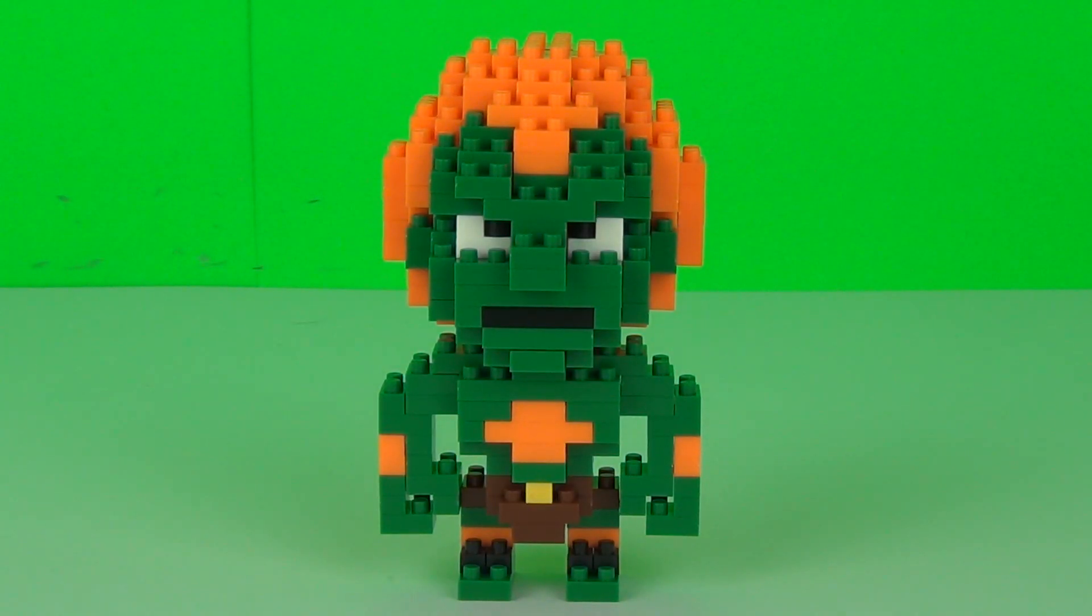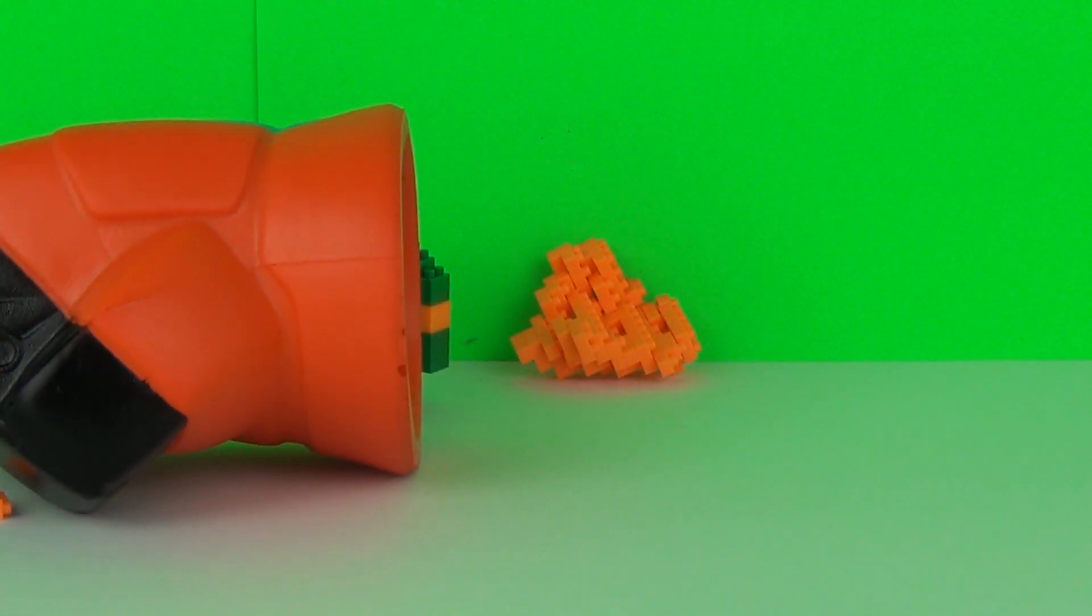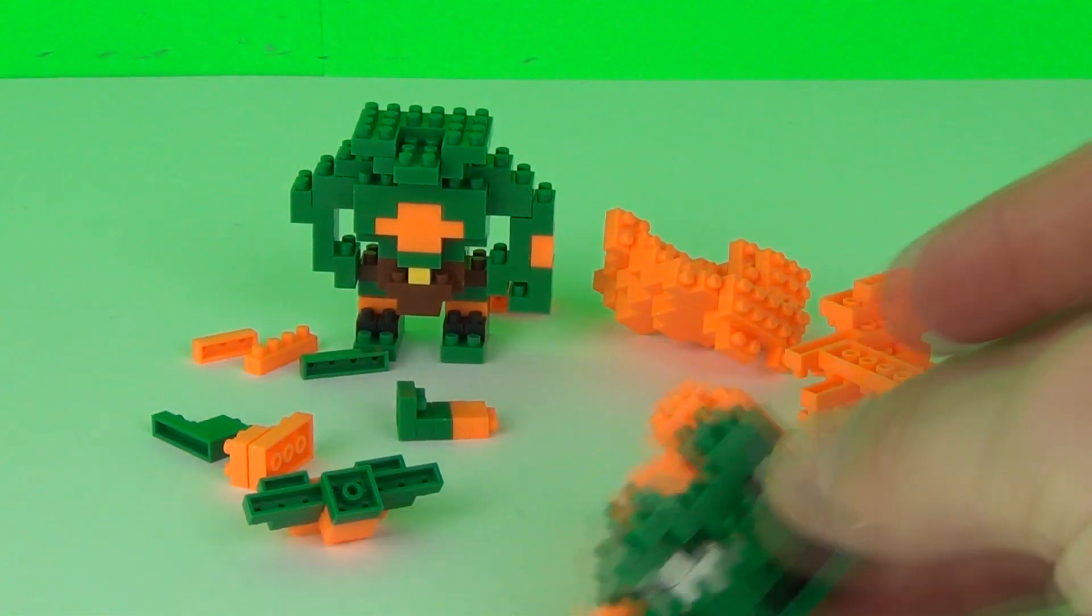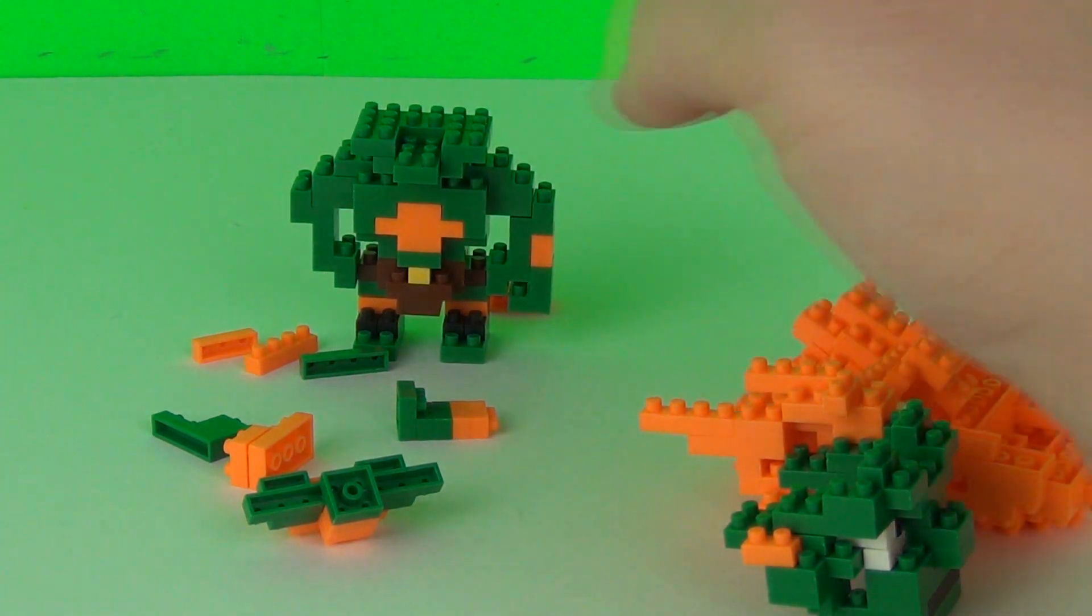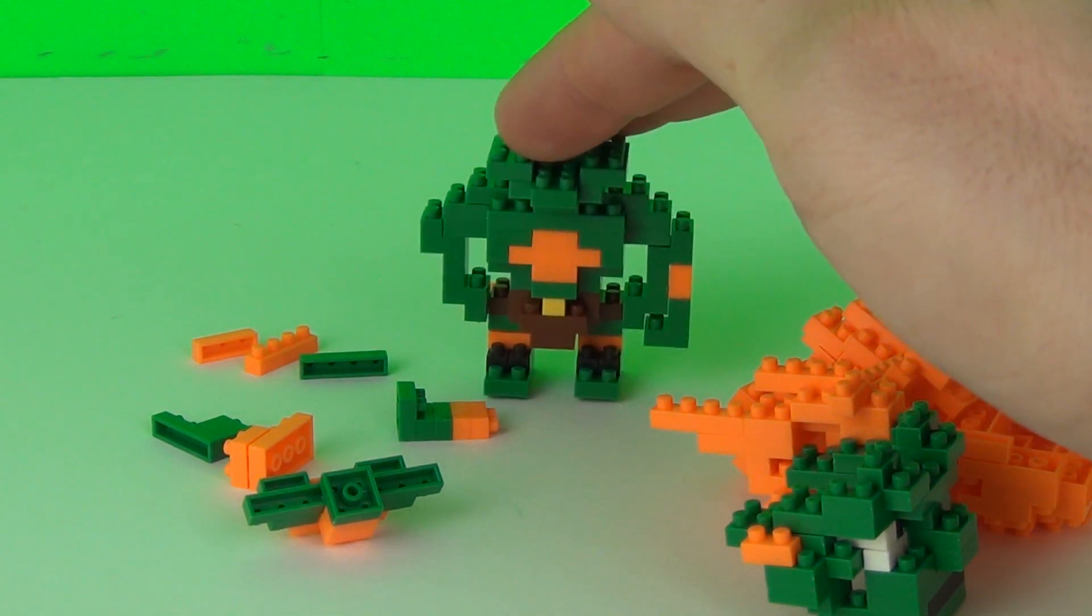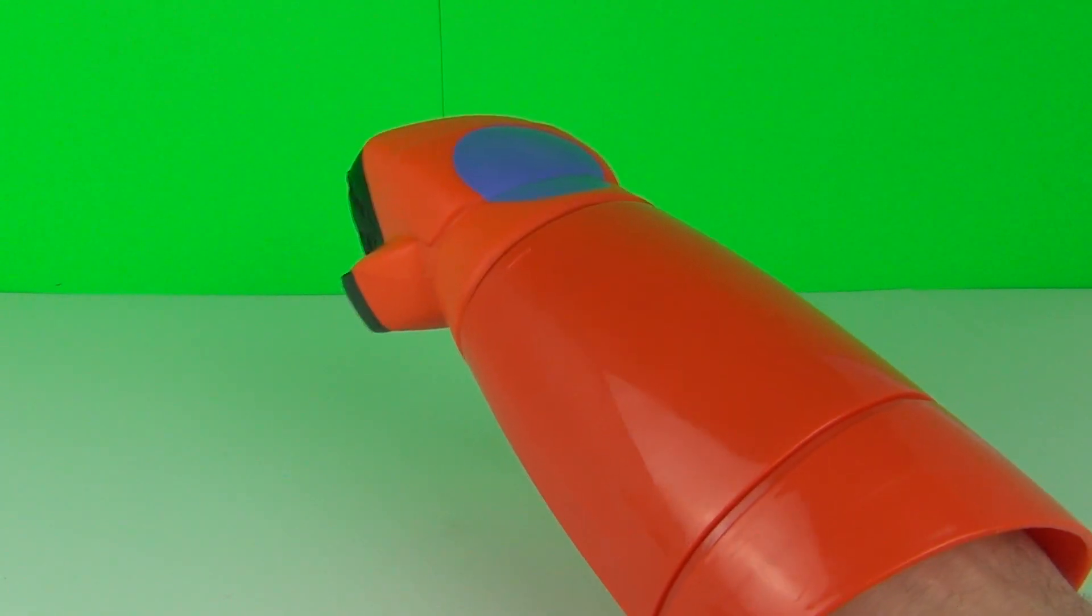Next in the firing line we have Blanka. Will he be destroyed as bad as Ryu? Let's find out. I think Blanka actually got it worse. His head is completely destroyed. There you go, still standing though guys. Arms - one arm is intact and his feet as well. But I just have to do that to prove how weak those toys really are.